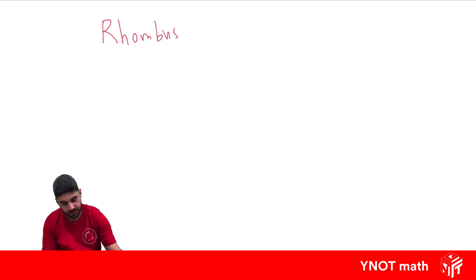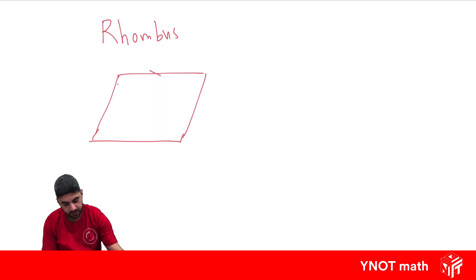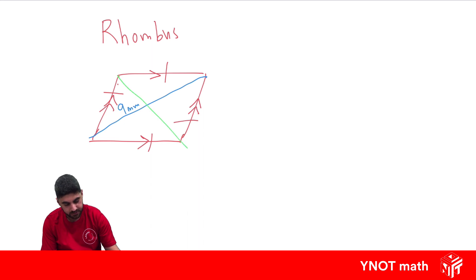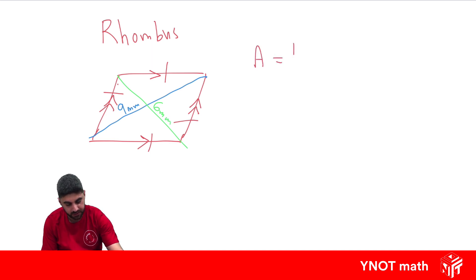A rhombus looks something like this, where the opposite sides are parallel and every side is equal in length. To find the area of a rhombus we actually need to know the diagonal lengths. Let's say one diagonal is 9 millimeters and this diagonal here is 6 millimeters.